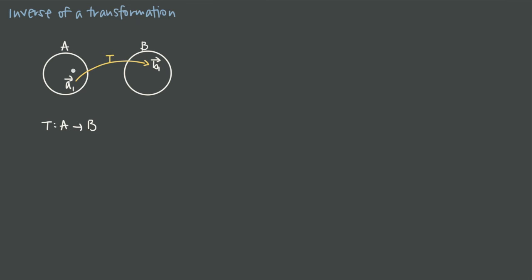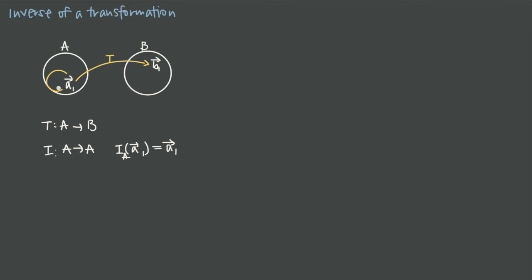We normally call a transformation capital T or capital S, but we also have this idea of the identity transformation. In the same way that if you multiply a matrix by the identity matrix the value doesn't change, if you transform a vector using the identity transformation, it just maps you right back to the same vector. So I could have an identity transformation I_A that maps vectors from A to vectors in A — specifically, if I take the identity transformation of vector A1, the result is still going to be the vector A1.